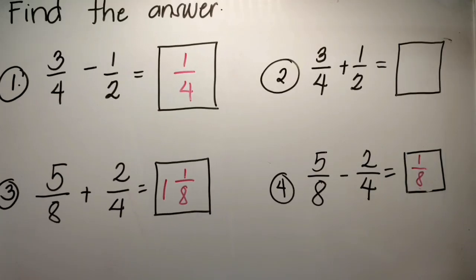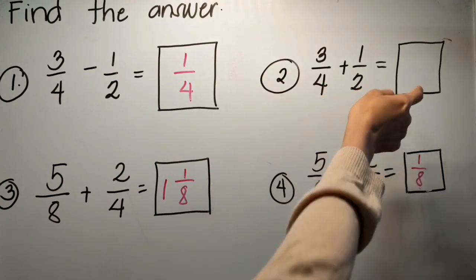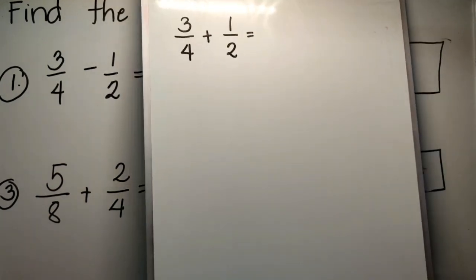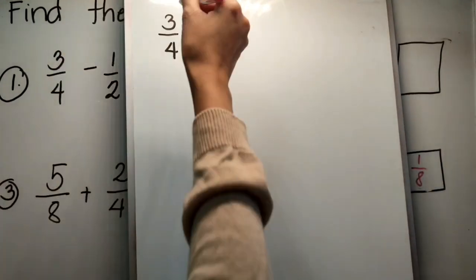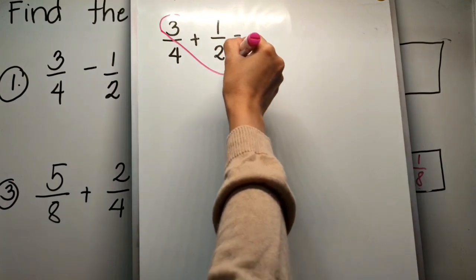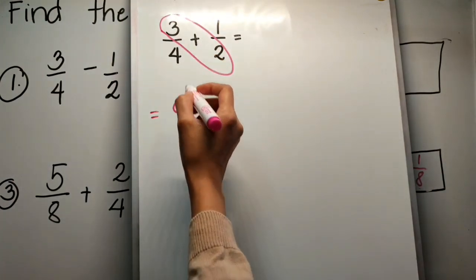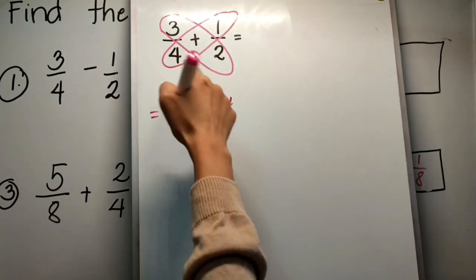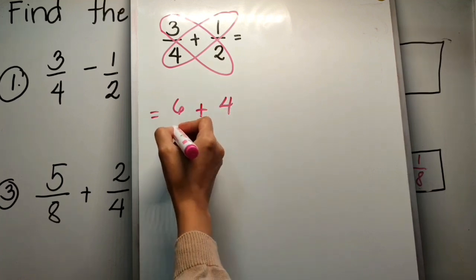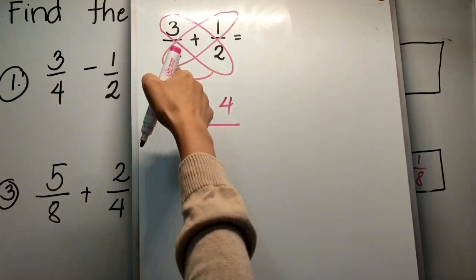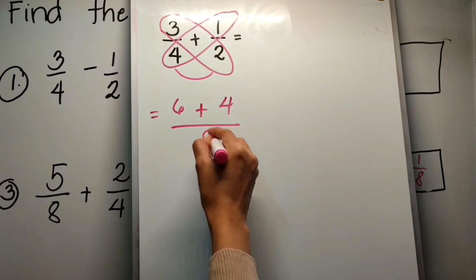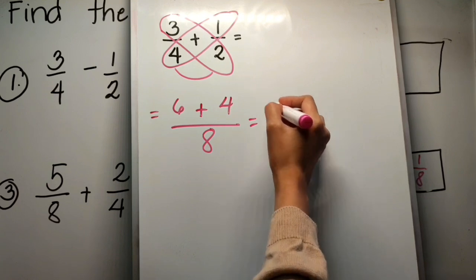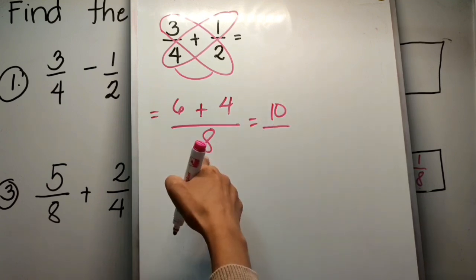Here are the answers. Now, kung napapansin ninyo yung number 2, hindi ko nilagyan ang sagot — i-solve po nating chat together. 3 times 2 equals 6, 1 times 4 equals 4. Copy the operation, then 4 times 2 is 8, then copy the denominator.